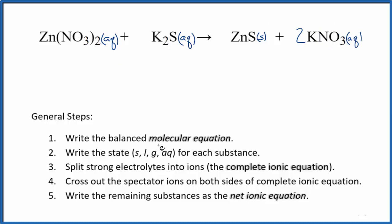So we have the state for each substance. Now we need to split the strong electrolytes into their ions for the complete ionic equation. Zinc is always going to be 2+, and the nitrate ion here, the whole thing, is going to be 1-. Good one to remember. So we have the zinc ion, Zn2+, and then we have two of those nitrate ions, two nitrate ions.